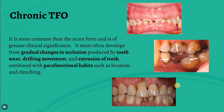Chronic trauma often develops from gradual changes in occlusion produced by tooth wear, drifting movement, and extrusion of teeth, combined with parafunctional habits like bruxism and clenching. These factors will affect the long-term fate of the teeth.